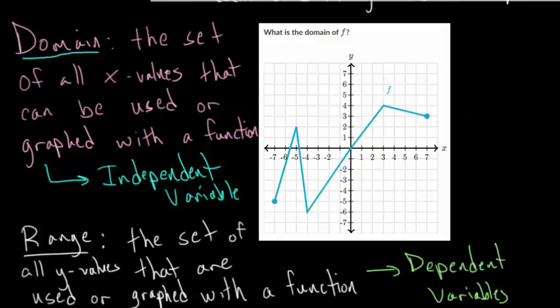And in general, the domain is almost always easier to find. The range, to find that, you really need to know what the graph looks like, which can be challenging with different functions.